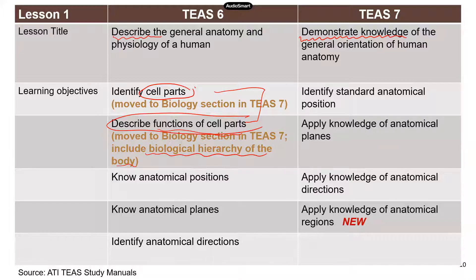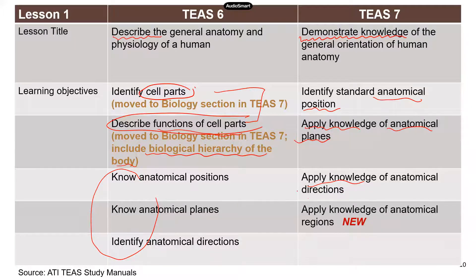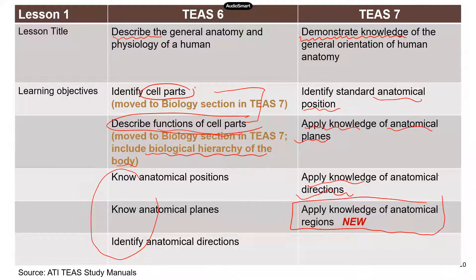For the rest of the learning objectives, they are pretty much the same between TEAS 6 and TEAS 7. You have to know the anatomical position, the anatomical planes, and anatomical directions. There is one new learning objective in TEAS 7: applied knowledge of anatomical regions. If you have taken human anatomy and physiology, you probably remember this is the first topic for the lab, and you have to remember the terms for all the different body regions.